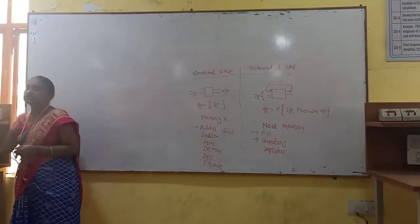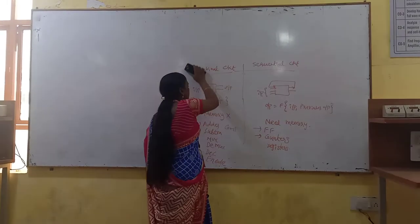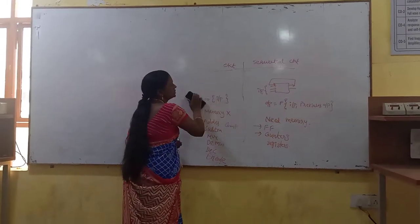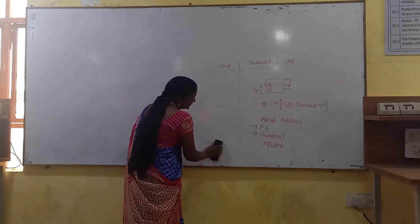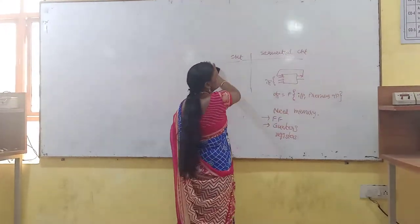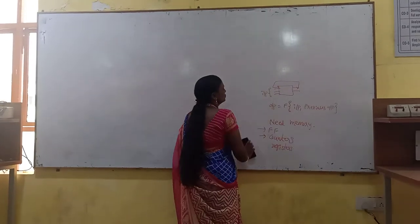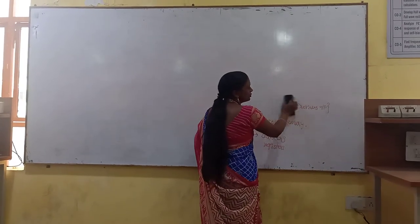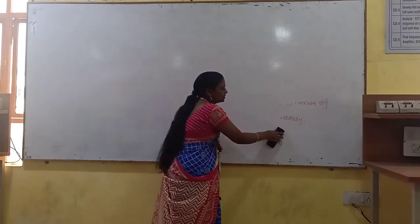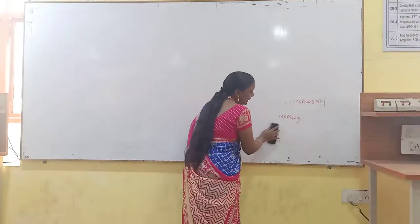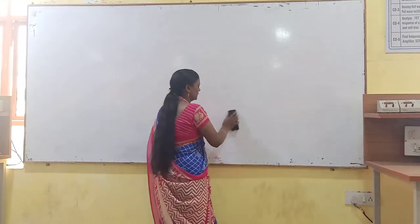For design of sequential circuits we use flip-flops, and for designing combinational circuits we use logic gates like AND, OR, NOT, NAND, and other basic gates. NAND and NOR are called universal gates because by using those two gates we can implement any function — that is why they are called universal gates.